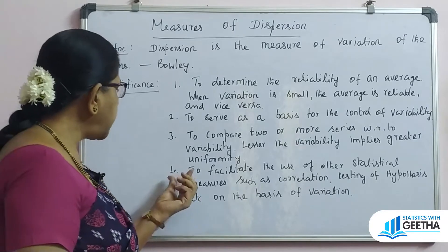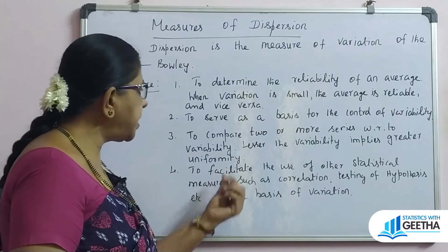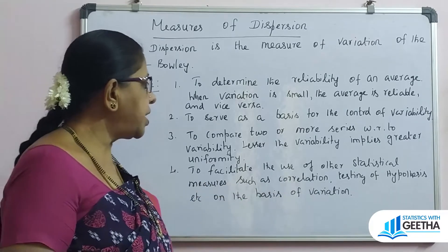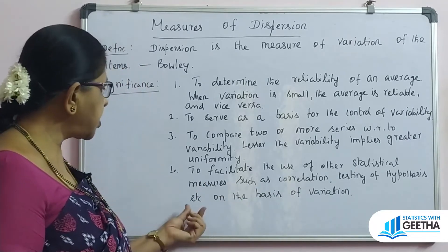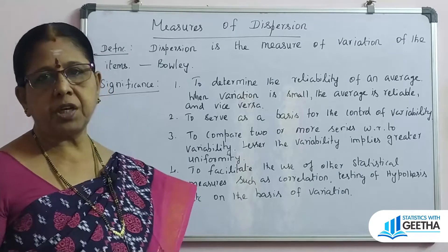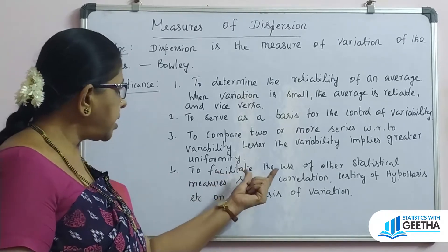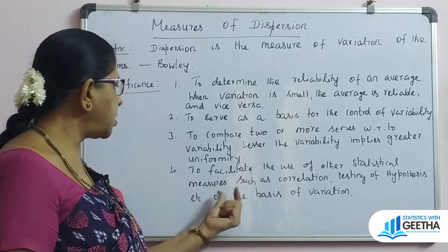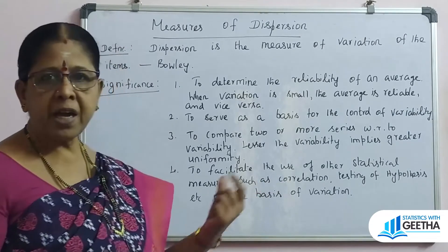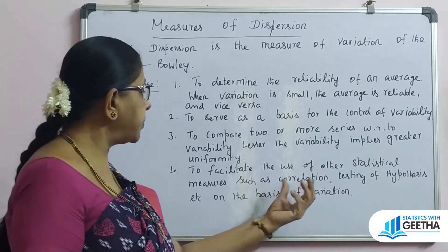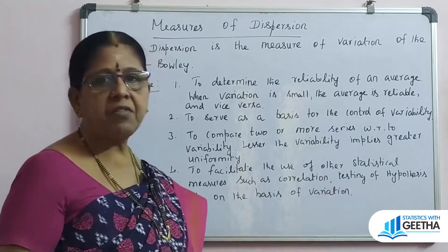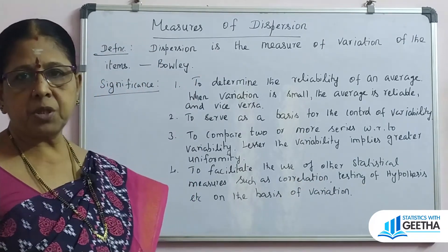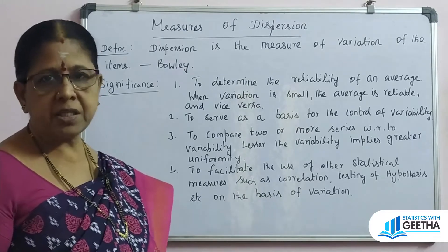We should also consider measures of dispersion to facilitate the use of other statistical measures such as correlation, testing of hypothesis, etc. The statistical measures we use to study correlation and testing of hypothesis are based on these measures of dispersion. That is why we should try to understand and test it.